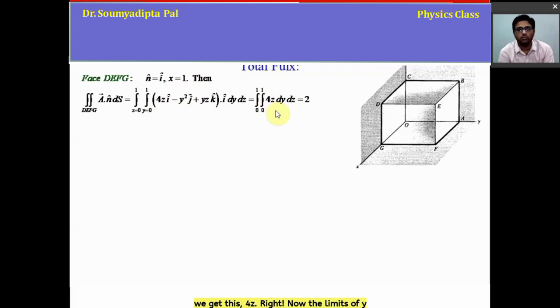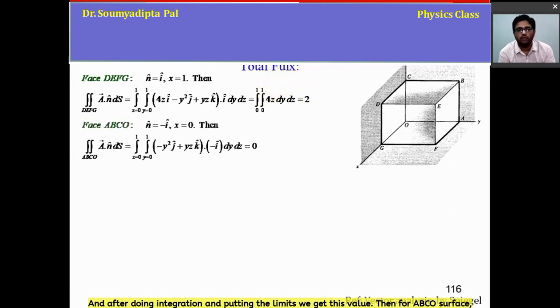Now the limits of y and z vary from 0 to 1, as this is a cube of unit length. And after doing integration and putting the limits, we get this value. Then for ABCO surface, which is this back plane, n cap is minus i cap and x equal to 0. So we get the integration value is 0.